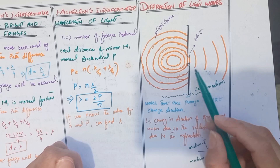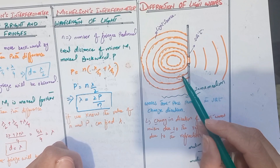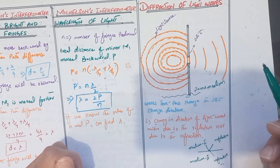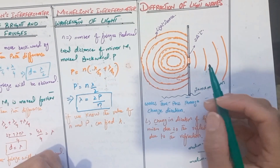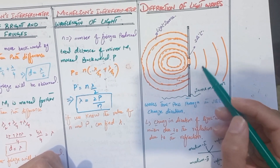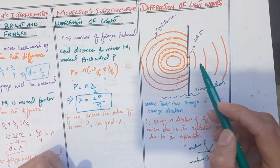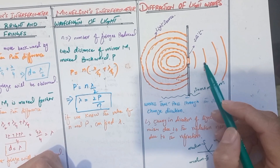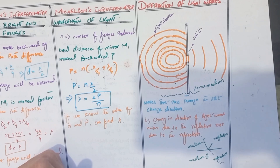So here there is no change in refractive index. The process of a light wave changing direction while passing through a region with the same refractive index on both sides is called diffraction.